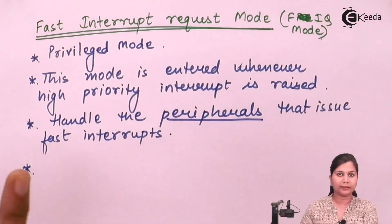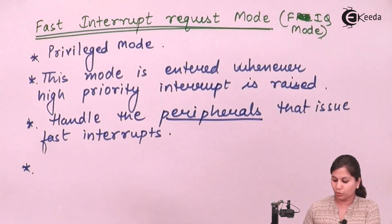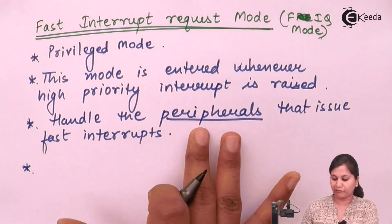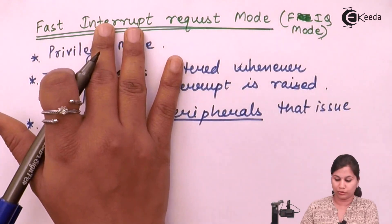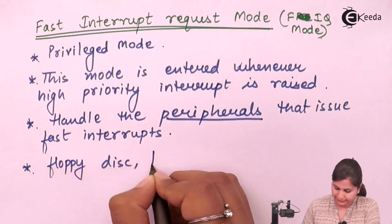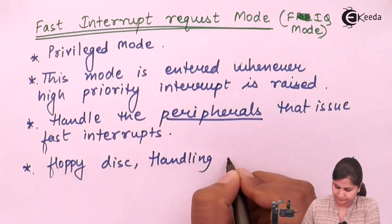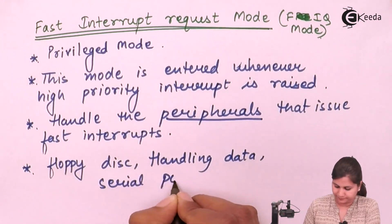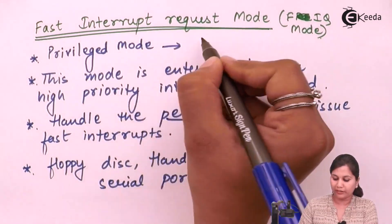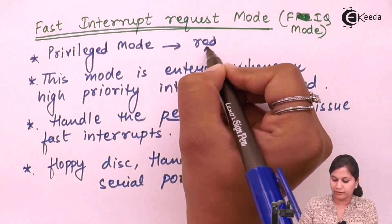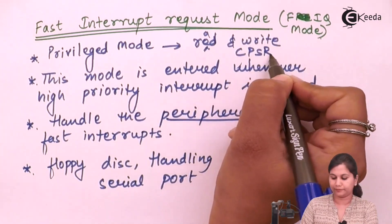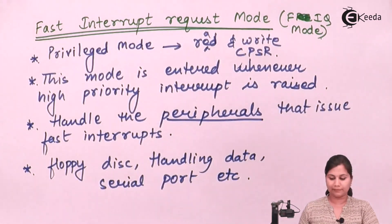Peripherals means input/output devices. Those input/output devices which generate very fast interrupts are handled in this FIQ mode. An example of such peripherals is a floppy disk. As it is a privileged mode, we can both read and write the current program status register (CPSR).